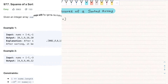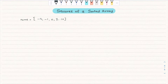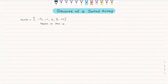Let's use the same example to understand this question. Looking at the requirement, they are saying take the square of each number, return the answer, and that should also be sorted.